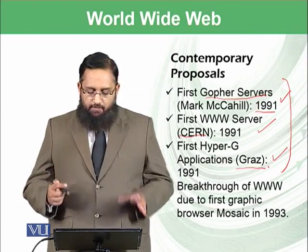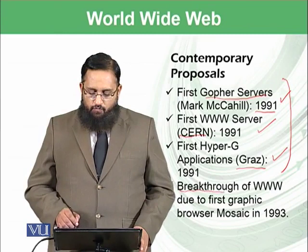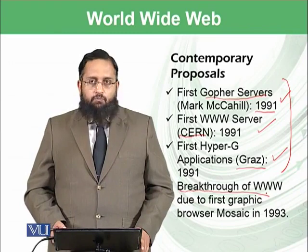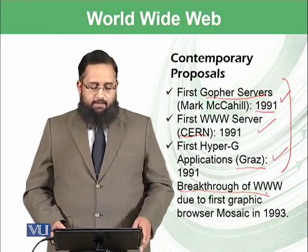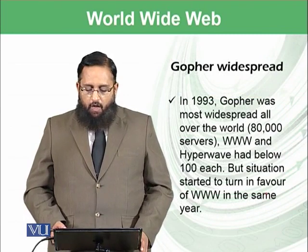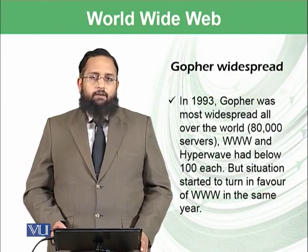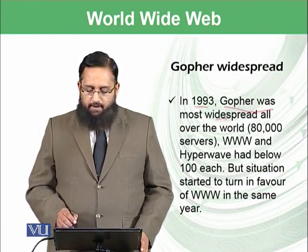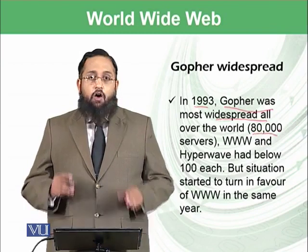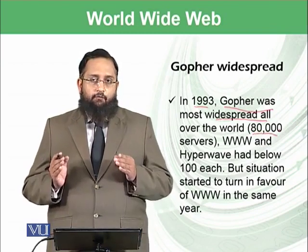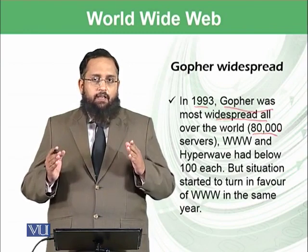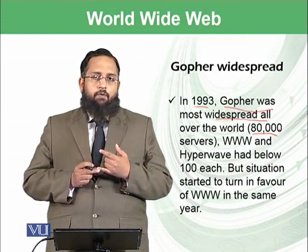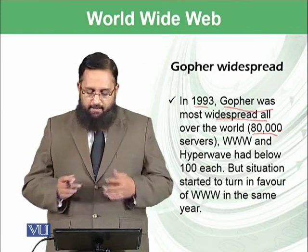All of these efforts were competing with each other in terms of applications, functionalities, features, etc. But the breakthrough was given to the World Wide Web due to the first graphical browser known as Mosaic in 1993. However, before the Mosaic browser in 1993, Gopher was more widespread all over the world — there were 80,000 Gopher servers available at one time in 1993, while at that time only less than 10 servers were available for World Wide Web and Hyper-G.